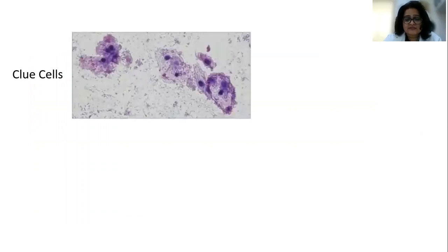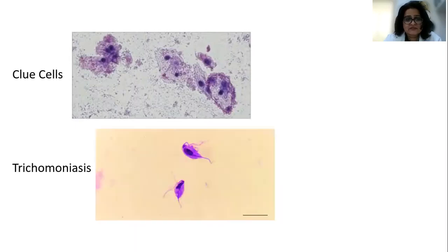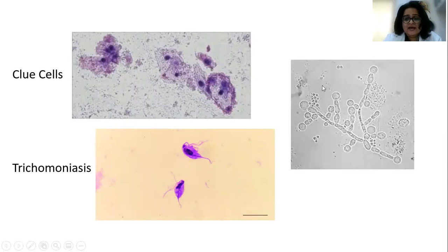Several image-based questions can also come on this topic. Clue cells are vaginal epithelial cells surrounded by gram-negative rods — that is how clue cells look. This came as a question in the last ion ICT. In trichomoniasis, you can see the flagellated organisms. These are the pseudo hyphae seen on a smear of candidiasis. These are very important to know.